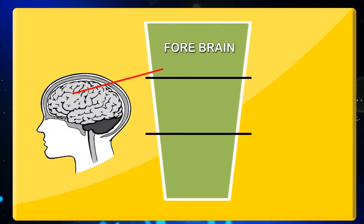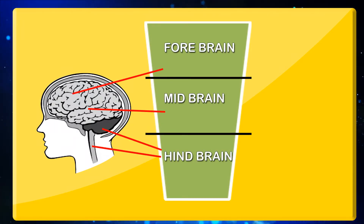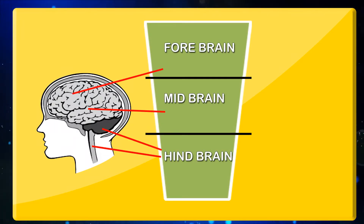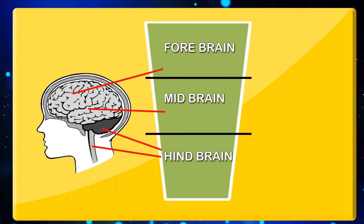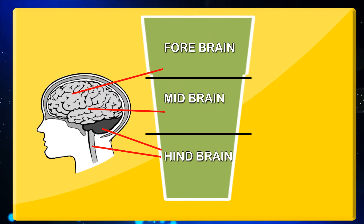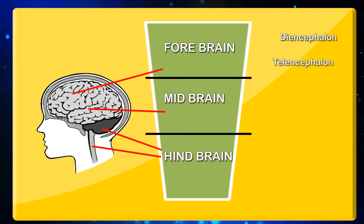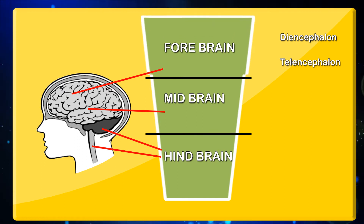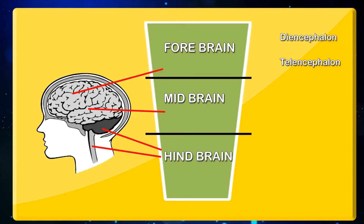Based on the position in the front, middle, or back of the skull, the human brain is divided into three major parts: forebrain, midbrain, and hindbrain. The forebrain is referred to as the center of processing sensory information. It has two sub-components called diencephalon and telencephalon. The diencephalon has the thalamus and hypothalamus to control sensory and autonomic processes.